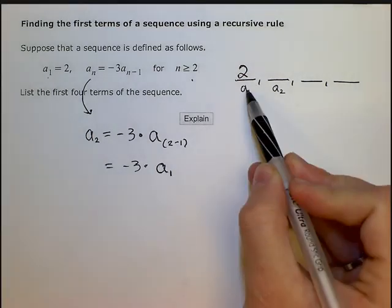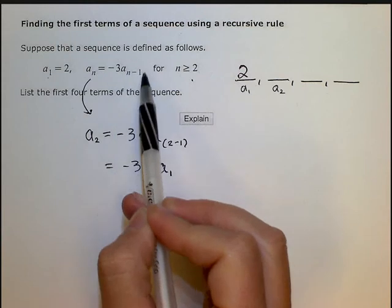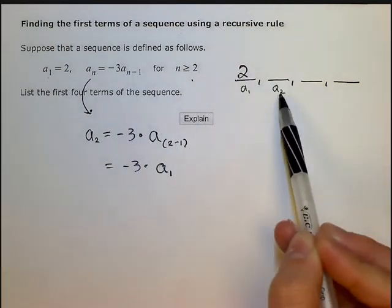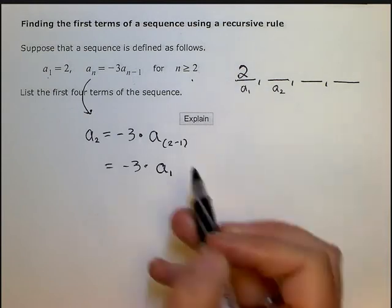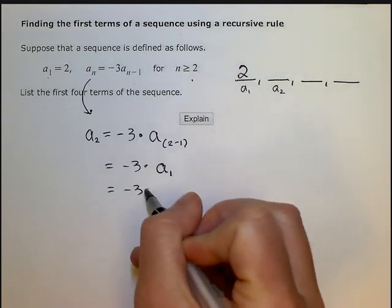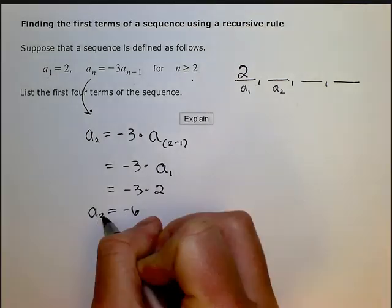Which means I have to just go take the previous term. So usually this a n minus 1 just means the term before. So if I'm trying to find a second term, I go back and use the previous term. So I'm going to have negative 3 times 2, which we know is negative 6. So my a sub 2 is negative 6.